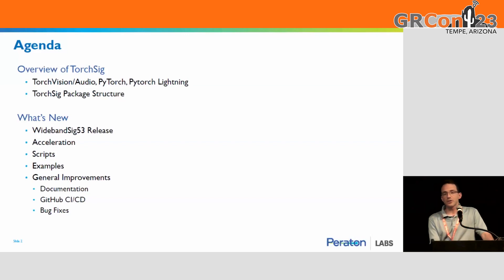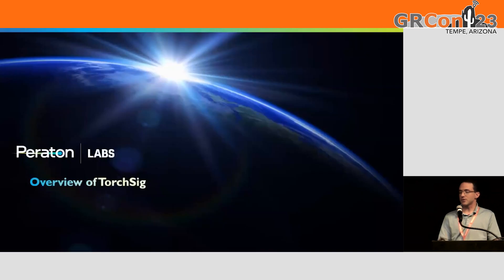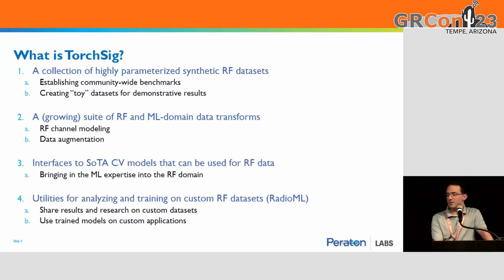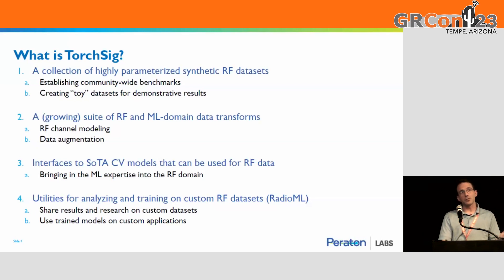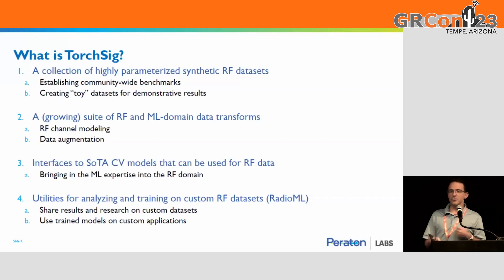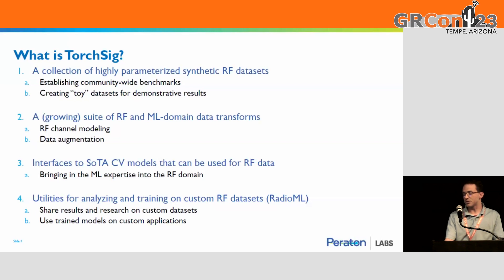I'll give a brief overview of what TorchSIG is. It's a collection of highly parameterized synthetic RF datasets. One big motivation was establishing a community-wide RFML benchmark. There have been various RFML datasets since around 2016, but when we tried to prototype new networks on them, you couldn't actually show improvement using those same datasets — they didn't provide the differentiation needed to say our new network or learning approach is better. Making datasets where people can see transparently how they were generated and how they could be improved was a key motivational factor.